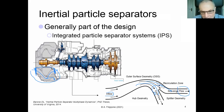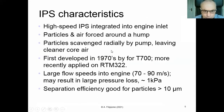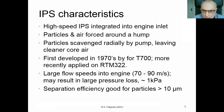This is how an integrated particle separator system — called the IPS — works. It is found in some engines like the RTM 322, which was a Rolls-Royce engine and is now a French engine after the rights were sold. It is an integral part of the power plant design. The IPS characteristics: they are integrated to the engine inlet; particles are forced around the hump because they are too heavy to follow the curvature; they go through a scavenge channel, leaving the core air cleaner — though not perfectly clean.